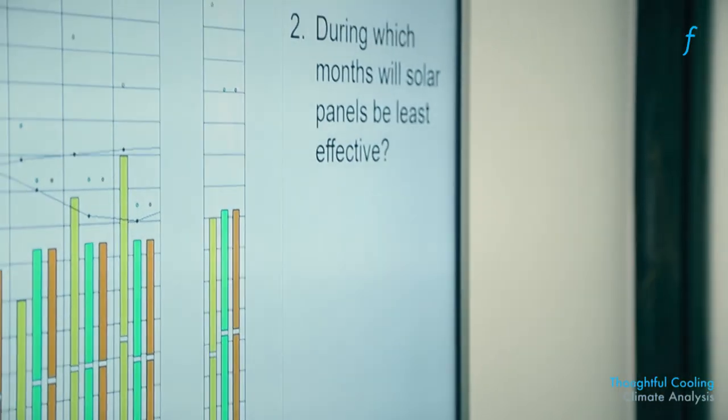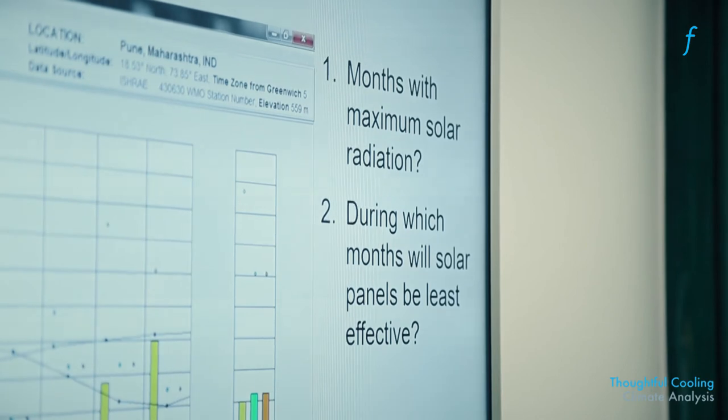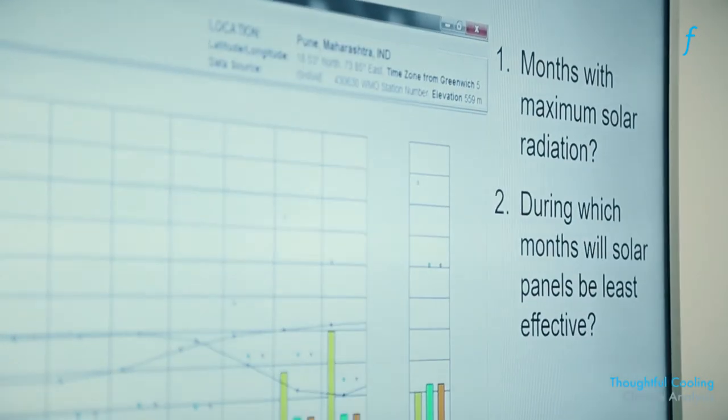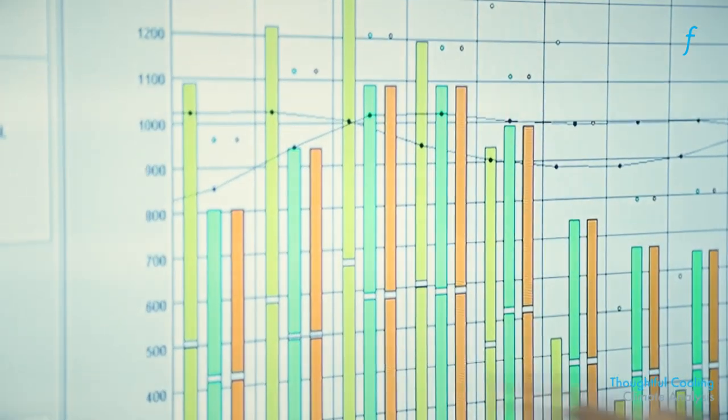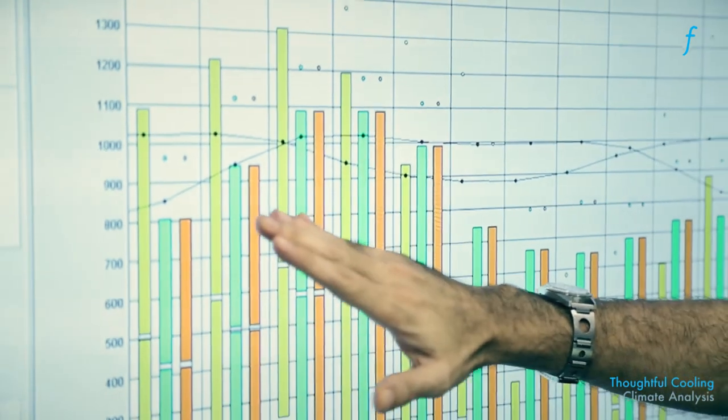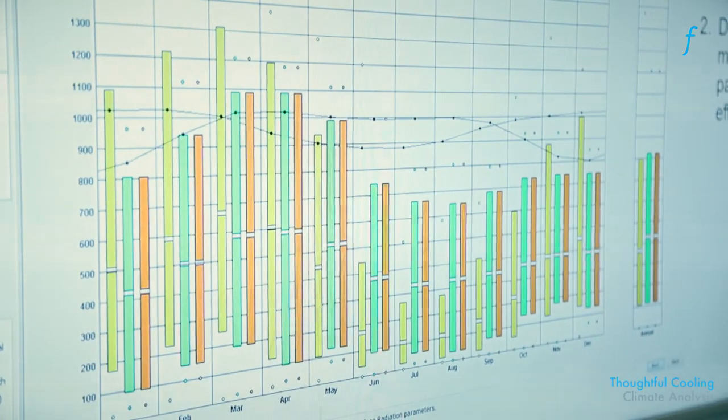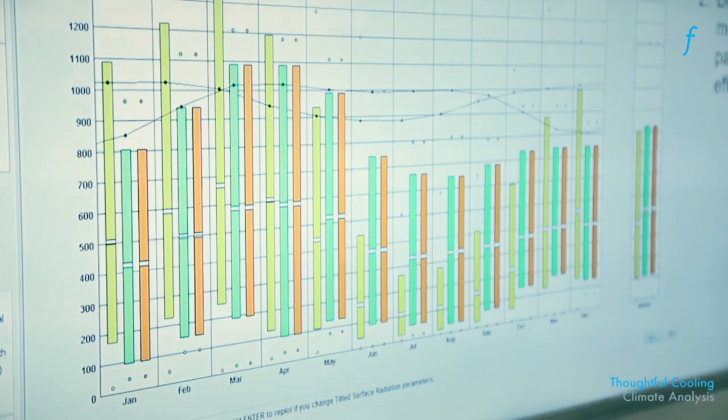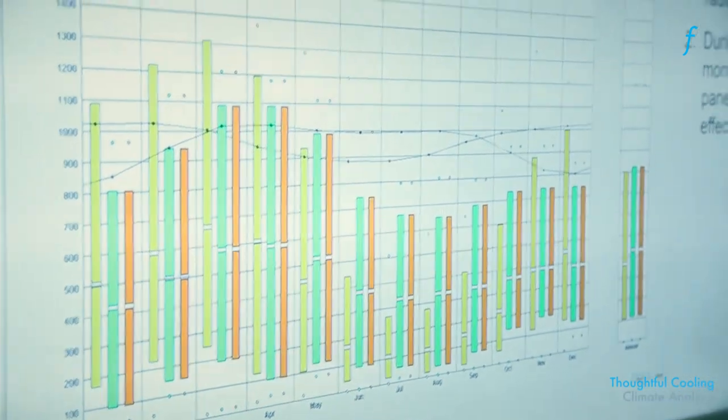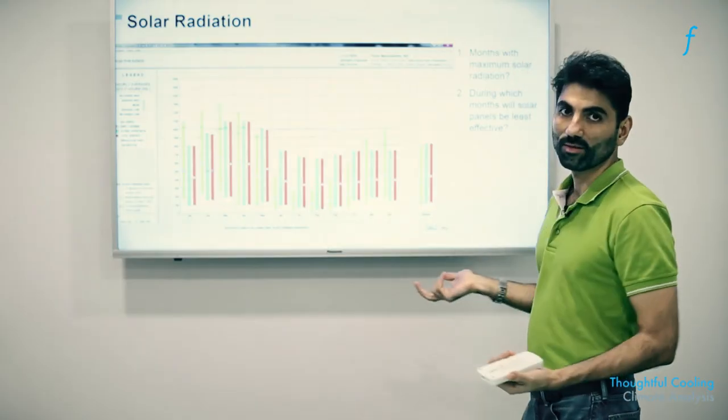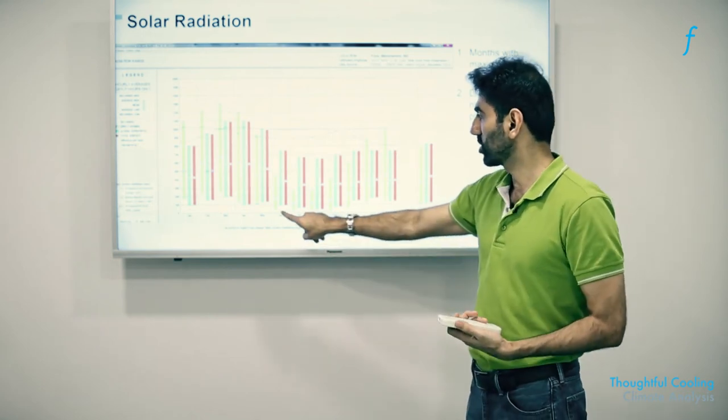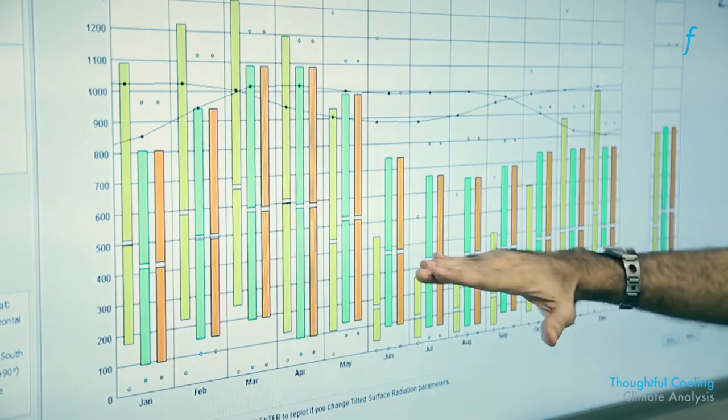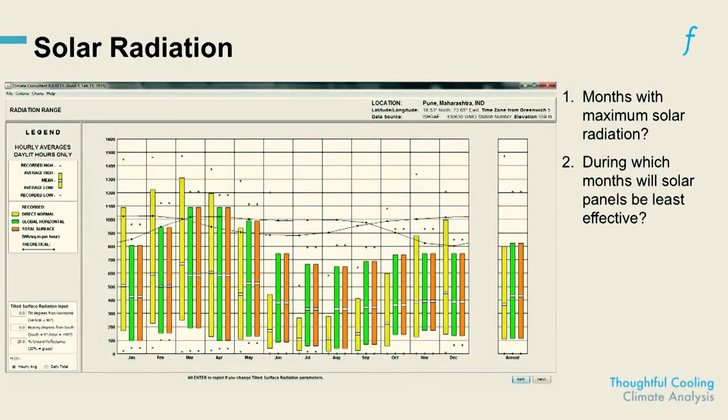Here are a couple of questions you could ask yourself: months with maximum solar radiation—and that clearly is indicated by these taller bars here. This is global radiation in terms of, I think, watt per meter square if I'm not mistaken. And on the x-axis you have your months. During which months will solar panels be least effective? Least effective solar panel months would be months where solar radiation is grossly inadequate, and that is most likely to be the monsoon months, where the solar radiation is the least.